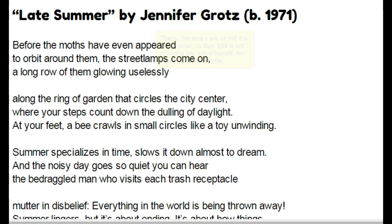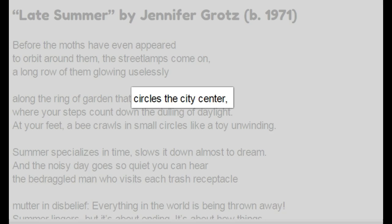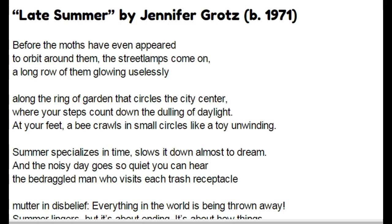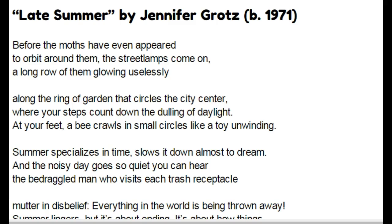The main image in the first stanza is the street lamps and the moths. The street lamps have come on before the moths have even appeared, so they are glowing but they're useless — they're just there. Then we have phrases like 'circles the city's center' — that S sound is repeated like concentric circles. If you draw a series of circles on a piece of paper, they get smaller and smaller. That's like the light that comes out from a street lamp. Light doesn't go out in a square, it goes out in a circle.